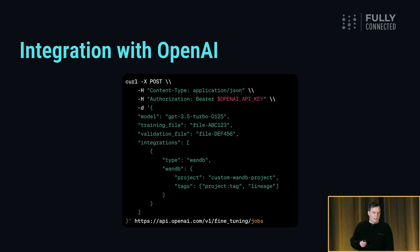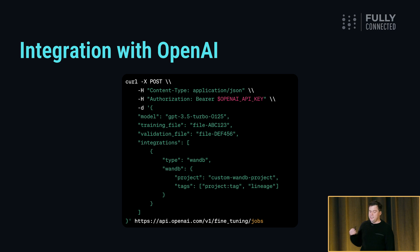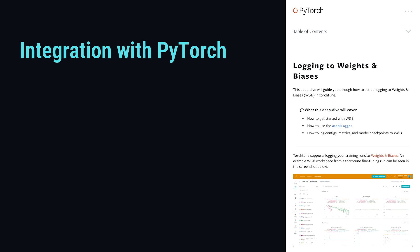Two integrations came out in the last two weeks that we really value — these are our partners doing the integration with Weights and Biases on behalf of our joint users. The first is our integration with OpenAI Fine-Tuning, which came out last week: you pass your W&B credentials into OpenAI one time, and forever after that your OpenAI fine-tuning runs will log into your Weights and Biases account. And yesterday, PyTorch launched TorchTune with a first-class integration with Weights and Biases — you set it up once and all your data flows in. Please come by our demo booth and check out the many features I can't mention here.